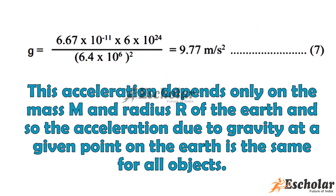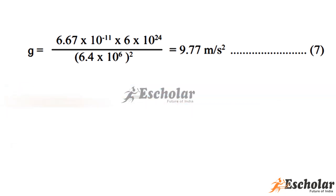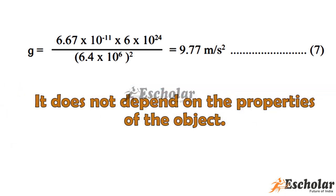This acceleration depends only on the mass M and radius R of the earth. And so the acceleration due to gravity at a given point on the earth is same for all objects. It does not depend on the properties of the object.